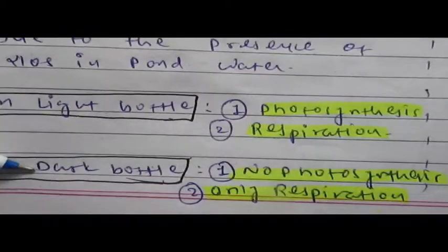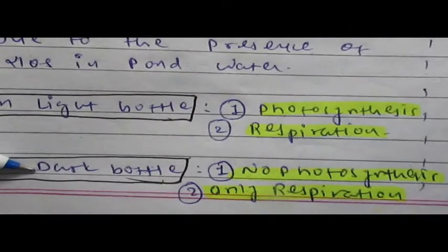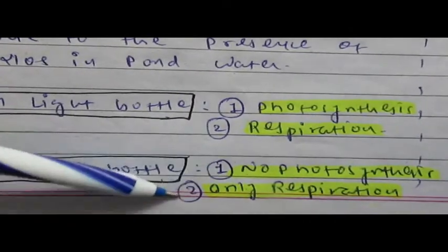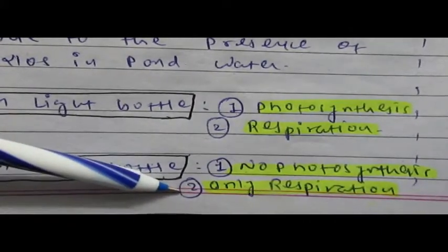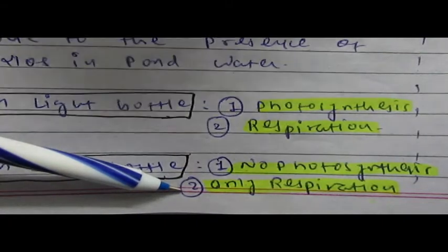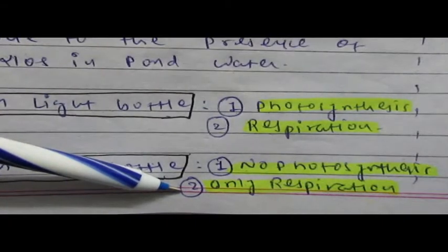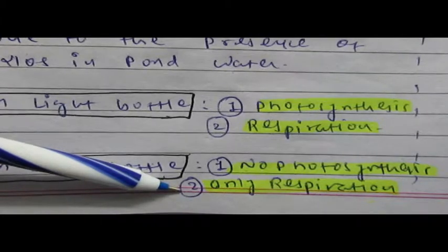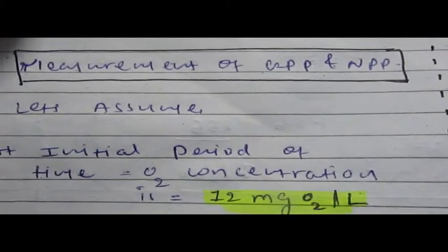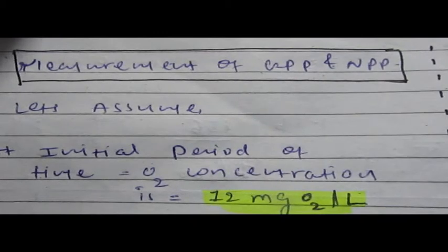In the dark bottle, sunlight is absent, so no photosynthesis occurs — only respiration occurs, because cyanobacteria, zooplanktons, and phytoplanktons are present, and cellular respiration occurs in those cells. This is how we count GPP and NPP terms.